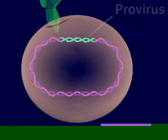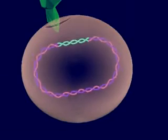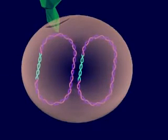During cell reproduction, the host cell copies the provirus genes along with its own DNA. The provirus is inactive at this time.